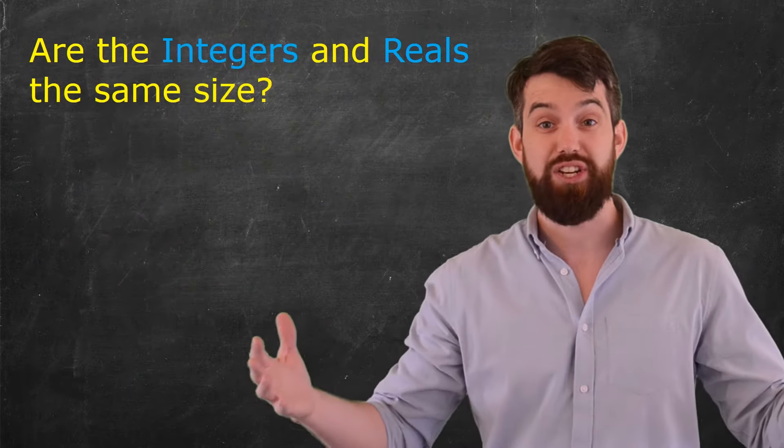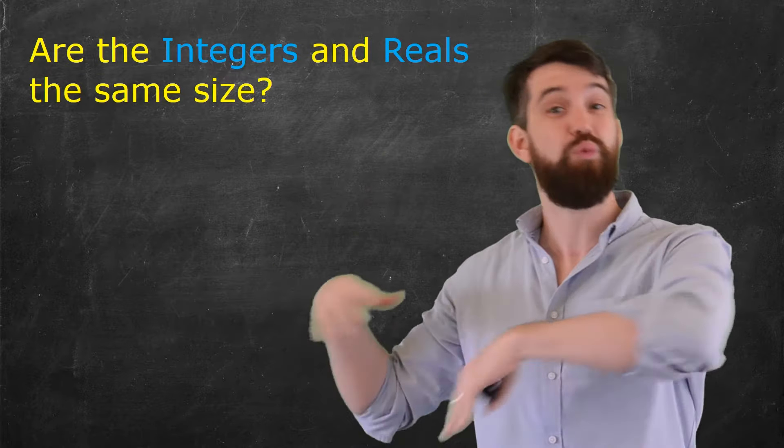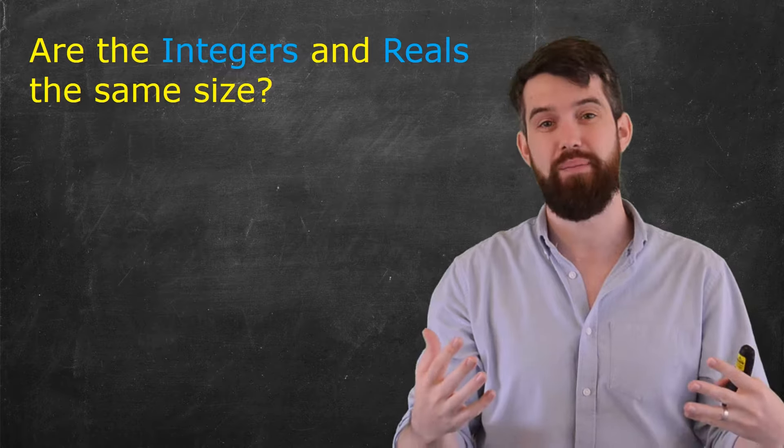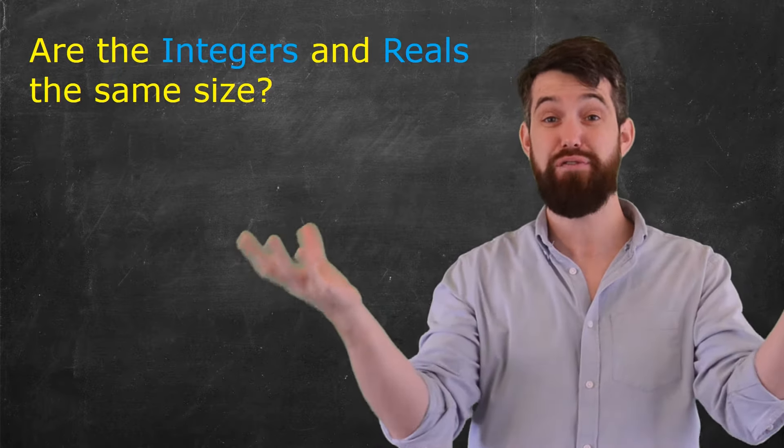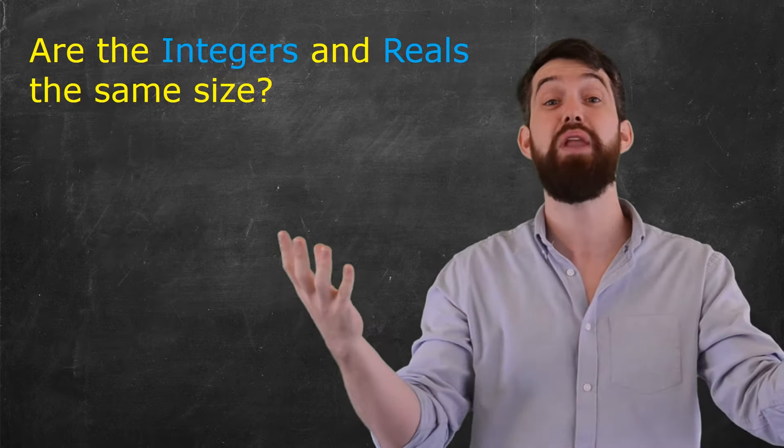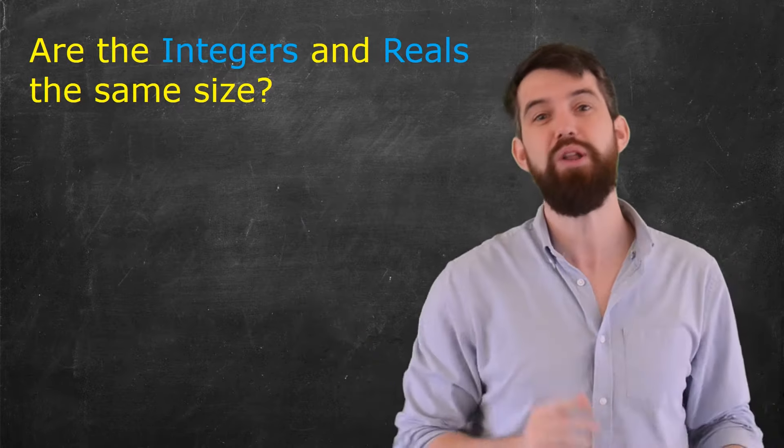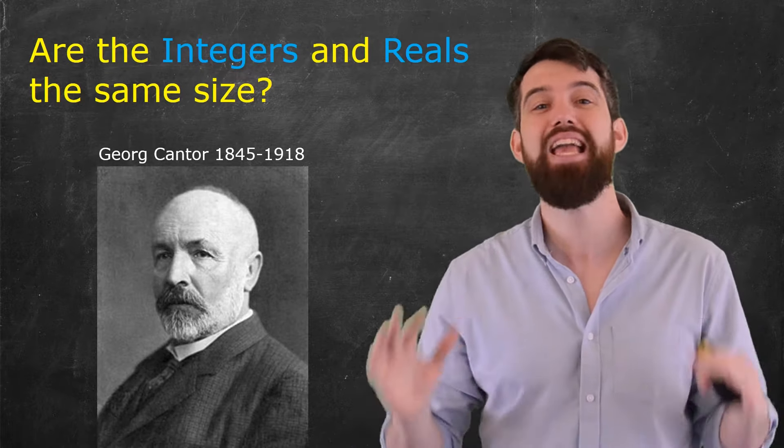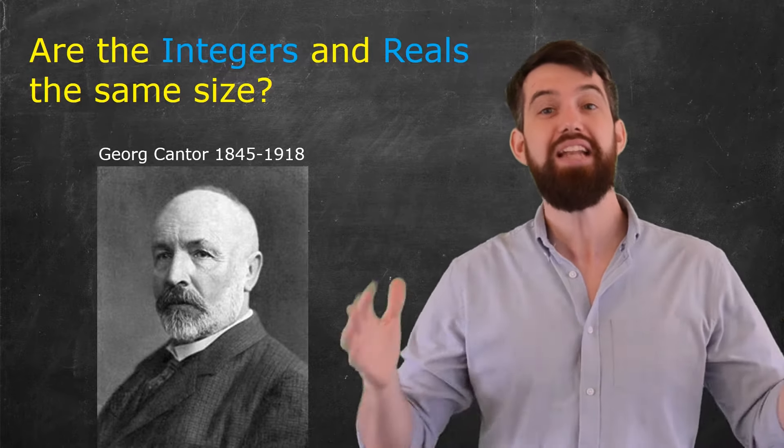So now the question is, what about comparing something like the integers and the real numbers, where the real numbers are those that have things like pi and e and root 2 in them? And what we're going to find out in this video is that in fact those two different infinite sets, the integers and the real numbers, do not have the same size. And the argument we're going to be using is one that is due to Cantor, and it is a very famous diagonalization argument, and I'm going to show it in this particular video.